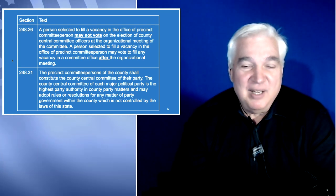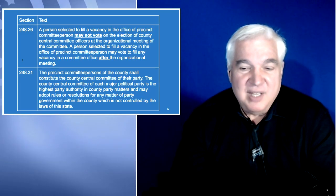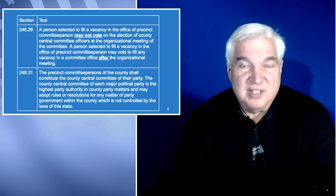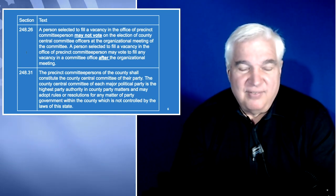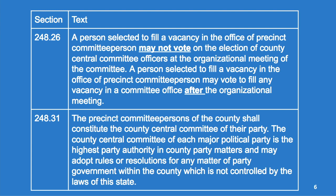Section 248.31: the precinct committee persons of the county shall constitute the county central committee of their party. This is where it states the membership in terms of parliamentary procedure. The county central committee of each major political party is the highest party authority in county party matters and may adopt rules or resolutions for any matter of party government within the county which is not controlled by state law. There is a lot of misinformation about the relationship between the counties and the state as if there were some top-down hierarchy, but there's not.